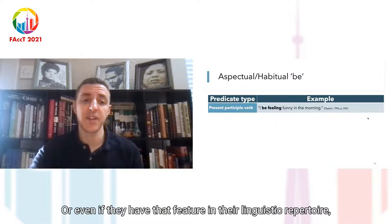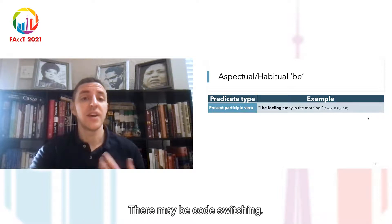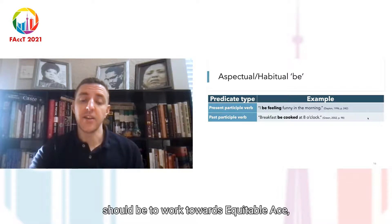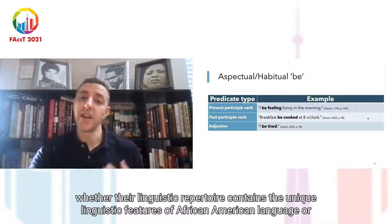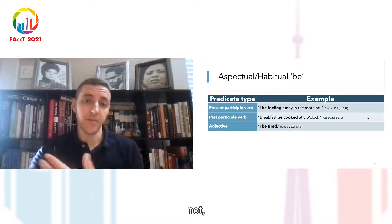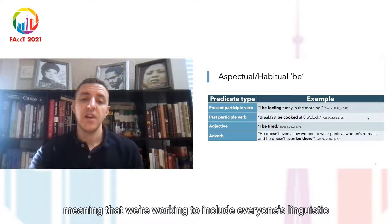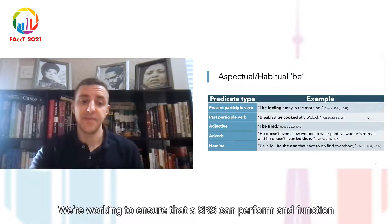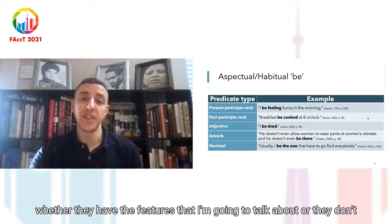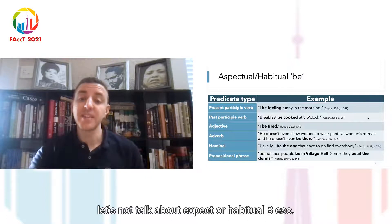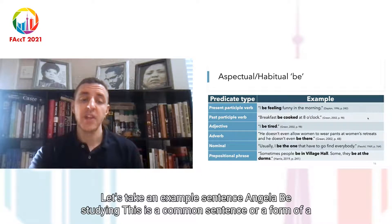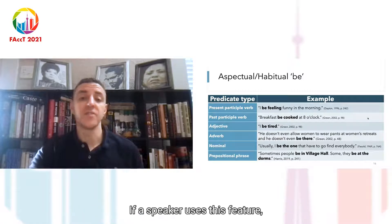Habitual B can happen with many types of predicates. 'I be feeling funny in the morning' means I usually feel funny in the morning. 'Breakfast be cooked at eight o'clock' means usually at eight o'clock every morning breakfast is cooked. 'I be tired' doesn't necessarily mean right now — it means I am usually tired at a certain time. 'He doesn't even be there' means he is never there. 'Usually I be the one that have to go find everybody' means explicitly I am usually the one that has to do it. 'Sometimes people be in village hall, sometimes they be at the dorms' — sometimes this is happening. So all of these predicates can follow habitual B, and the B in these instances carries the characteristic of the habitual.